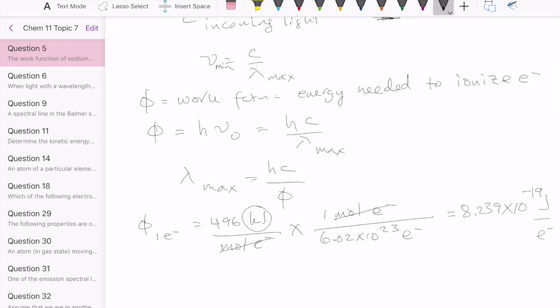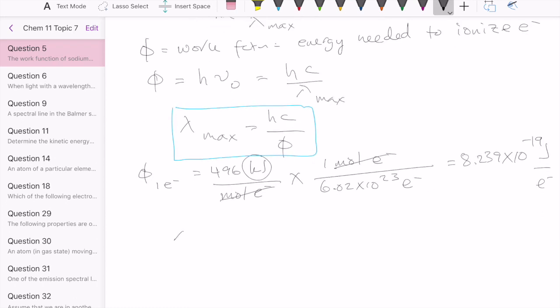Now, once you have that number, you can then find lambda max. So lambda max is going to be H, which is Planck's constant, this value. And C is speed of light, which is 3 times 10 to the 8 meter per second. And then the work function is this. And we calculate this out.